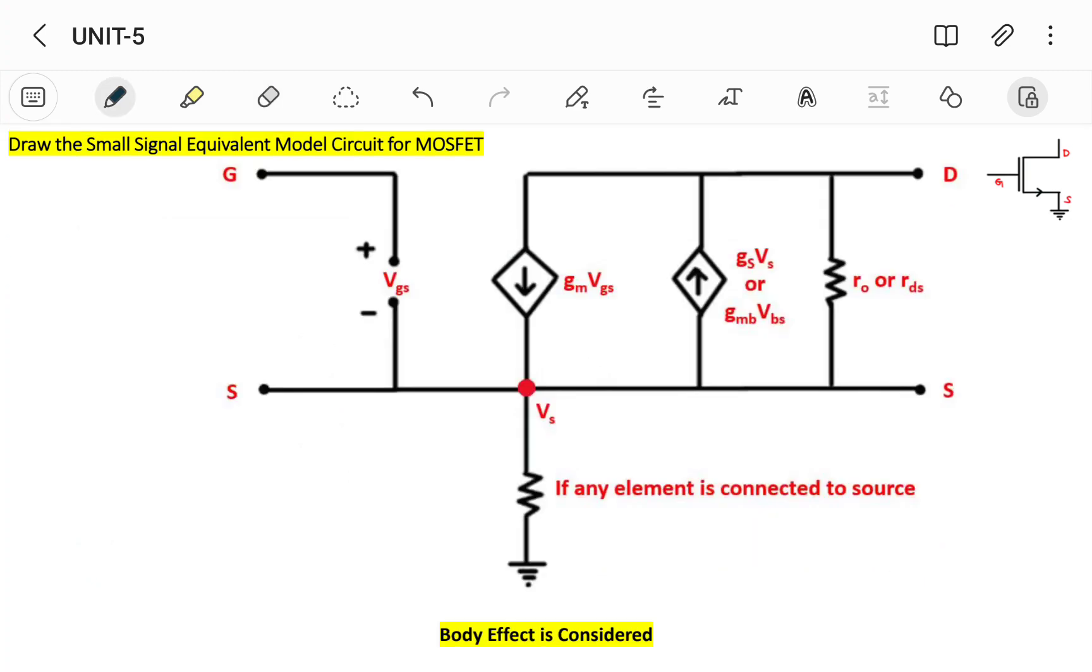Now let us see what will be the modification if body effect is considered. Everything is same. Again, as we know that gate current IG will be zero, so VGS is zero, so it should be indicated with open circuit. Here this is denoted with open circuit, and between gate and source I'll apply input. We have already seen this one for the flow of current IDS: it should be indicated with the gm times VGS, where this current is depending upon the voltage between gate and the source.